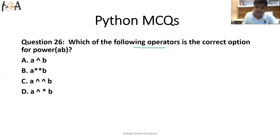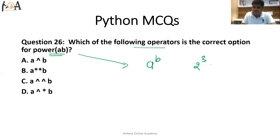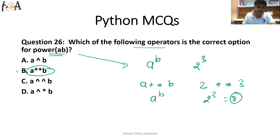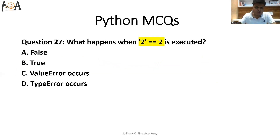Question 26: which operator is correct for power a to b? If you want to find the power of a to b — say two to the power three — in Python there is a double star operator (**). So a**b means a to the power b. Writing 2**3 gives the result 8. That is why option B is the correct answer.